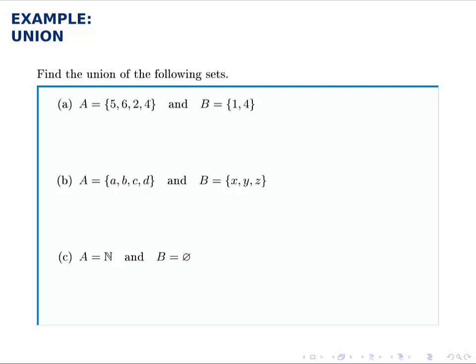For part A, we're given two sets, A and B, and we want to find their union. So we'll write that A, and then the U for union, B, and this is going to be...